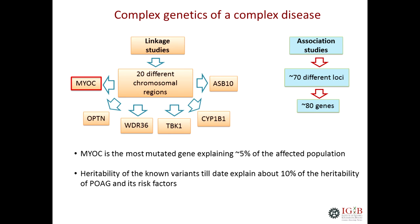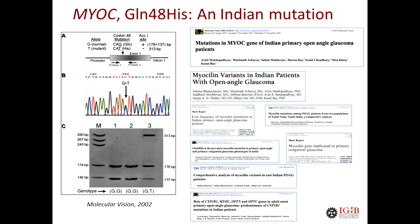There are multiple known genes and over 70 loci identified by linkage study, but as I said, together they don't explain more than five percent of disease burden. We started working on this problem more than a decade ago and were the first to publish genetic mutations in Indian glaucoma patients. This particular mutation is a glutamine to histidine mutation at the 48th codon of the myocilin gene, and after us many others also published about this mutation.